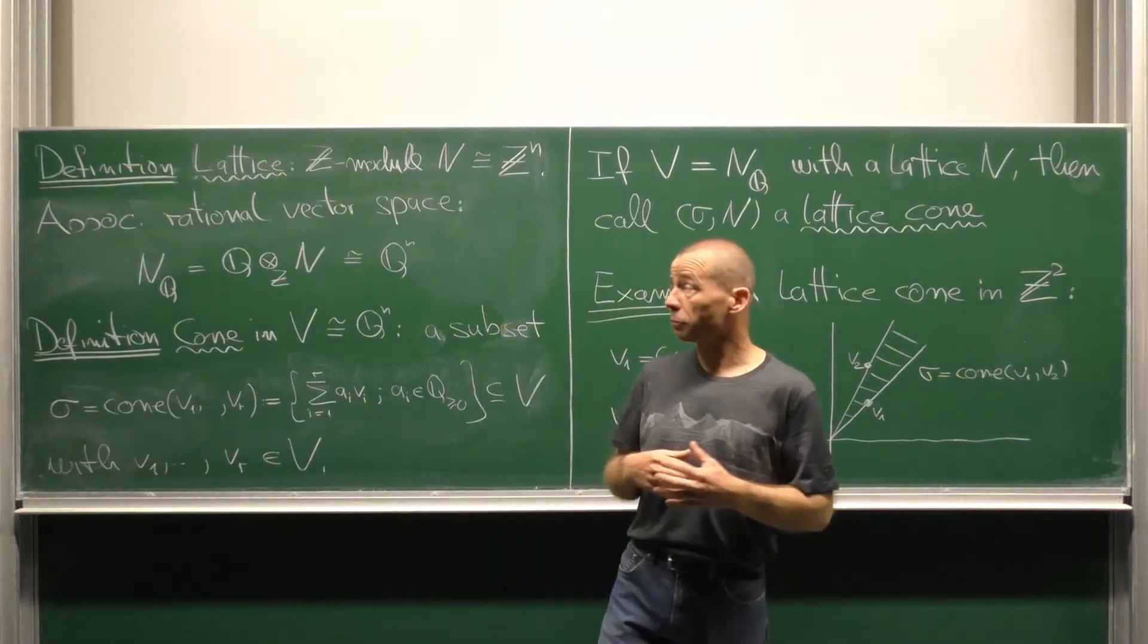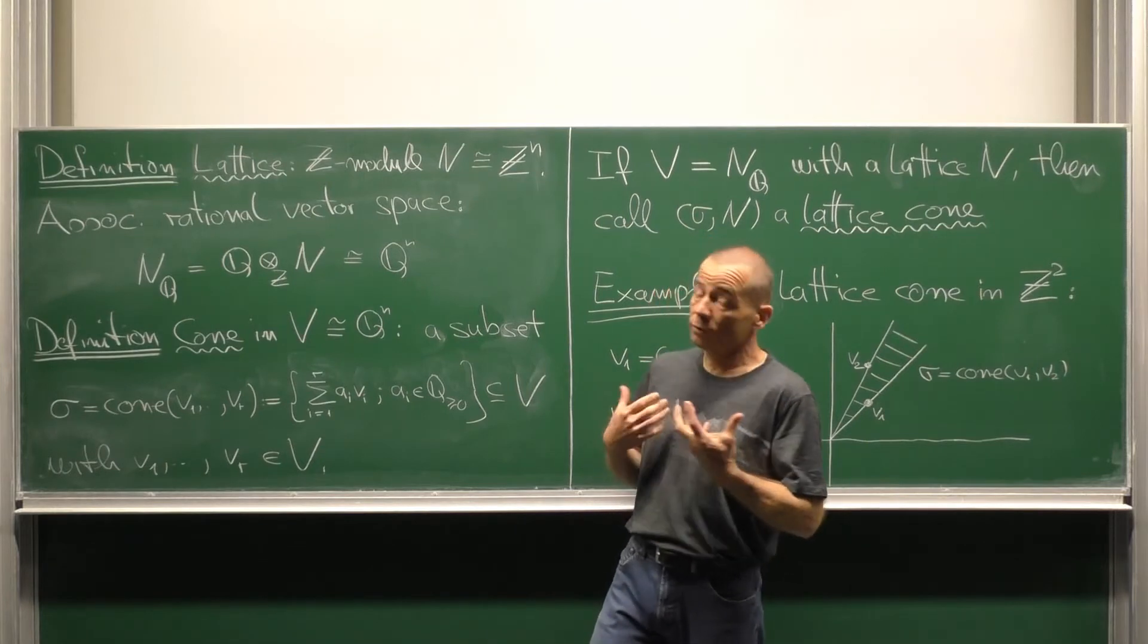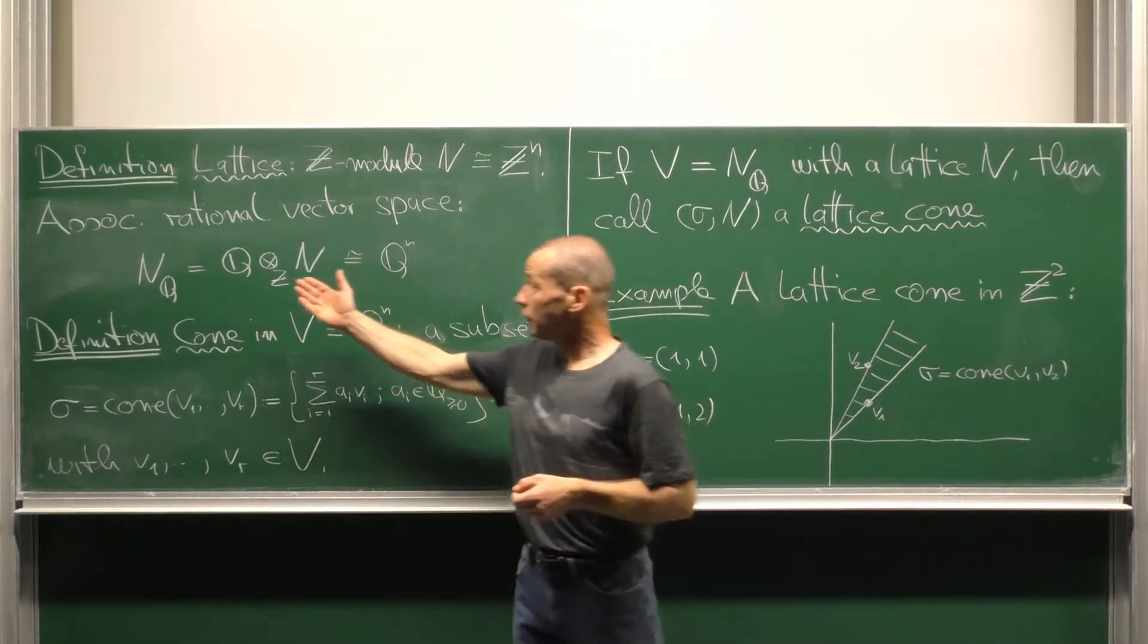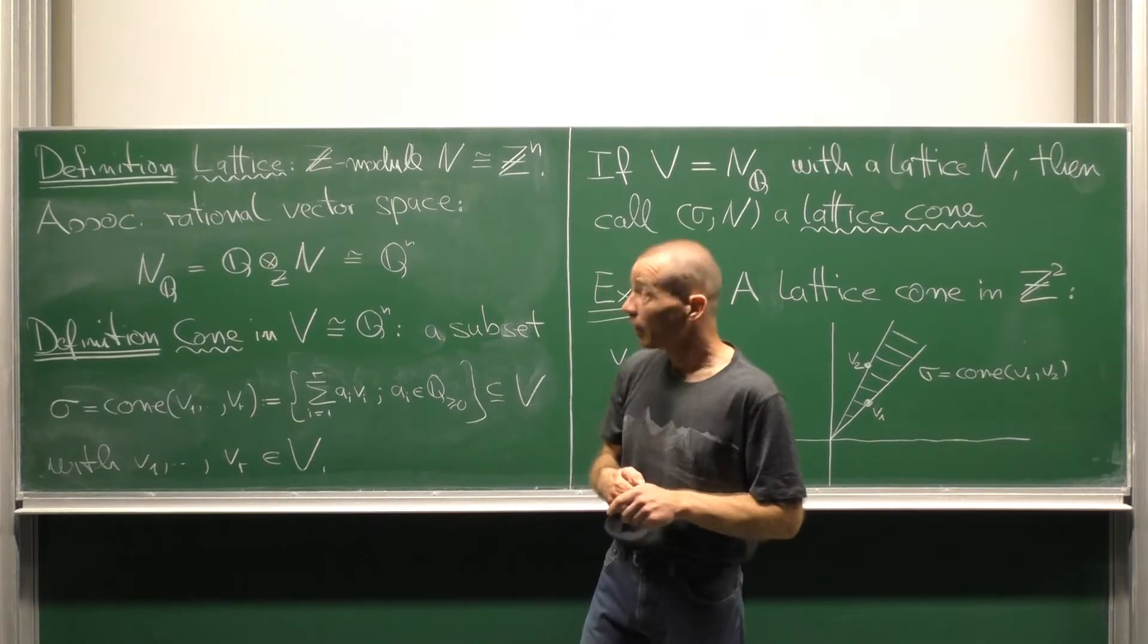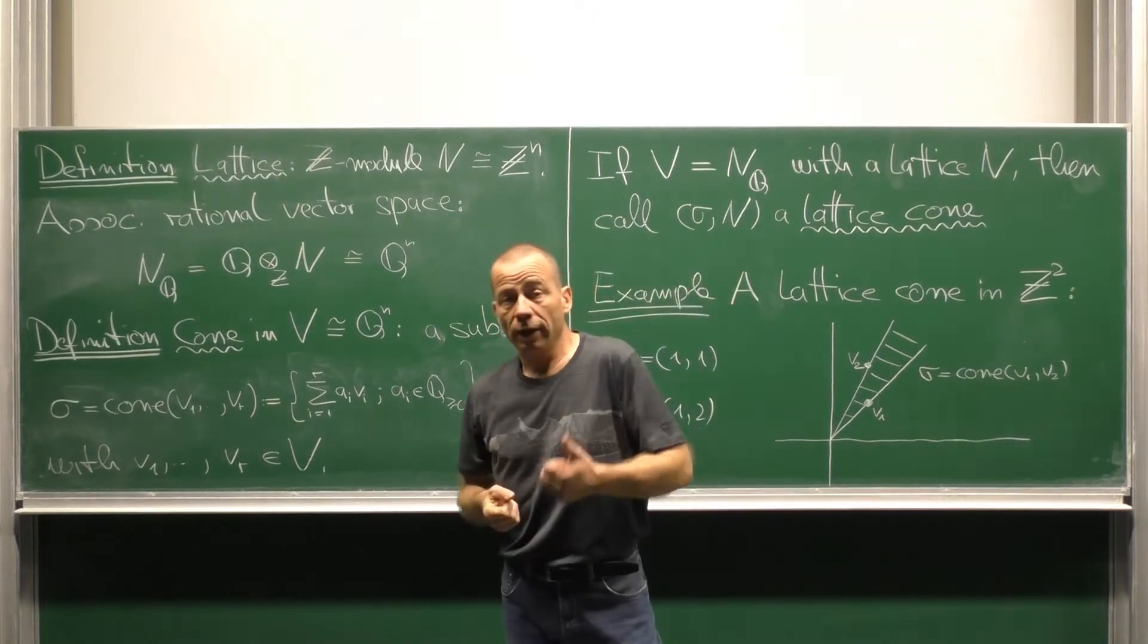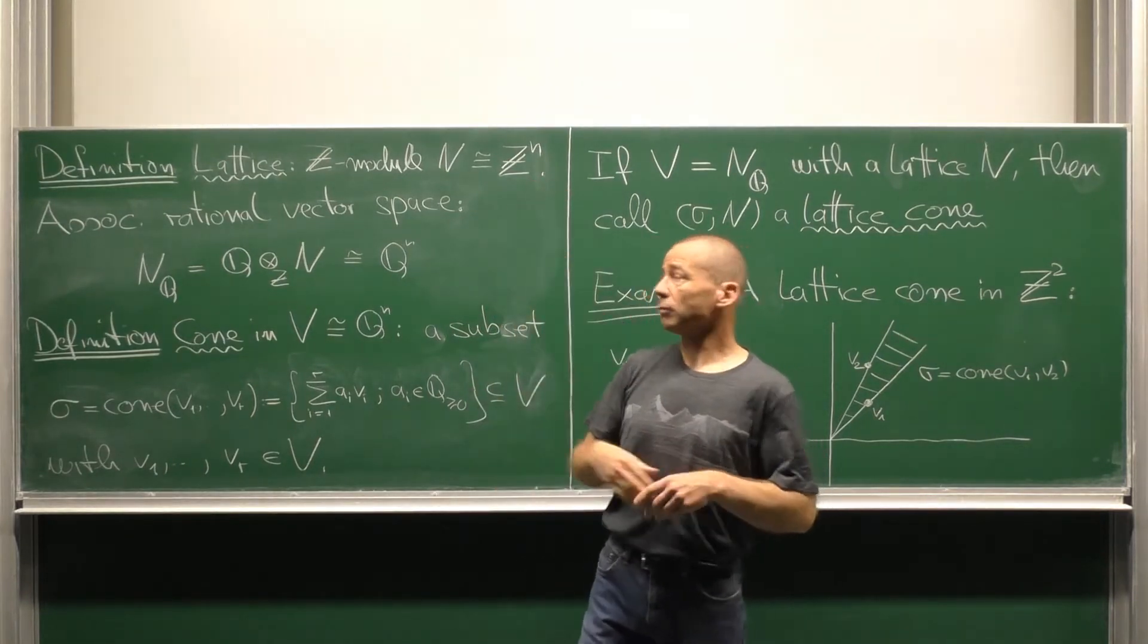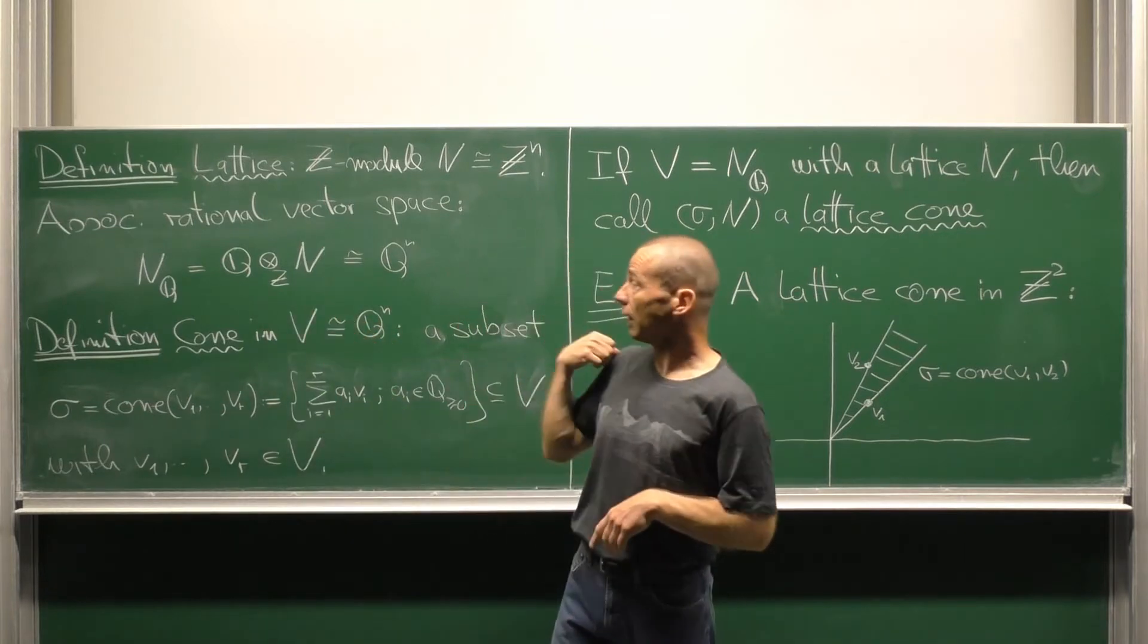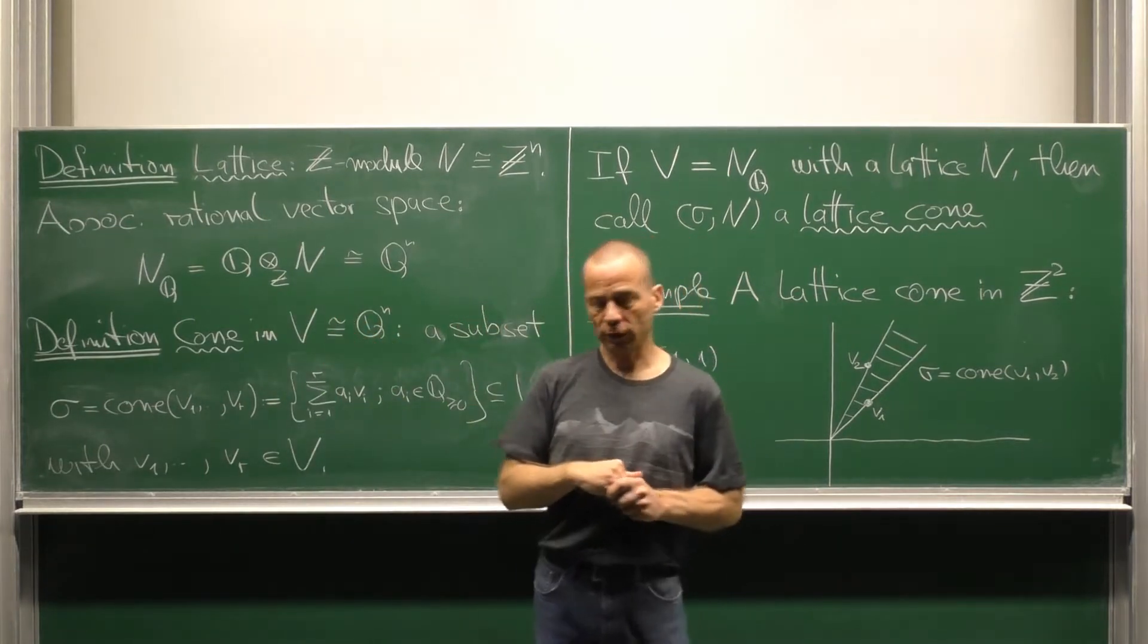The rational vector space associated with the lattice N is Q tensor N. So in case N is isomorphic to Z to the N, Q tensor N is isomorphic to Q to the N.